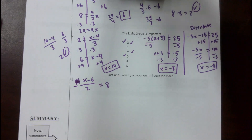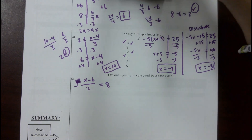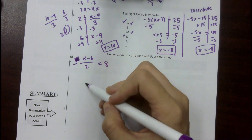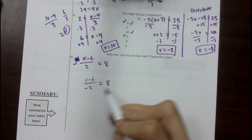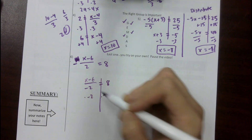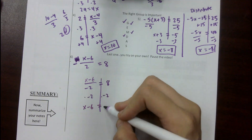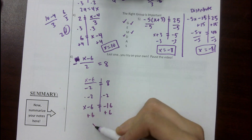Try number 6 on your own. If you put the negative on the denominator, we multiply both sides by negative 2. That leaves the numerator by itself on one side and negative 16 on the other. Then add 6 to both sides and we get x equals negative 10.